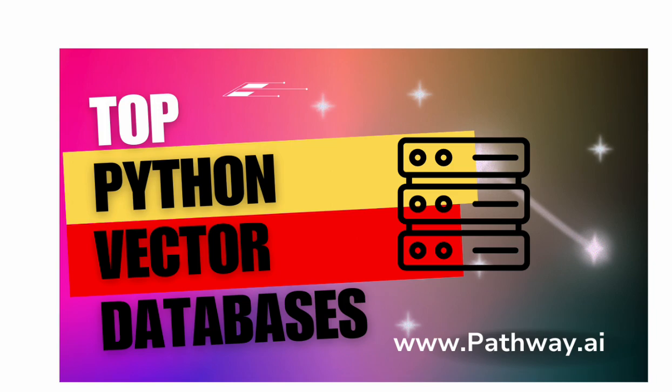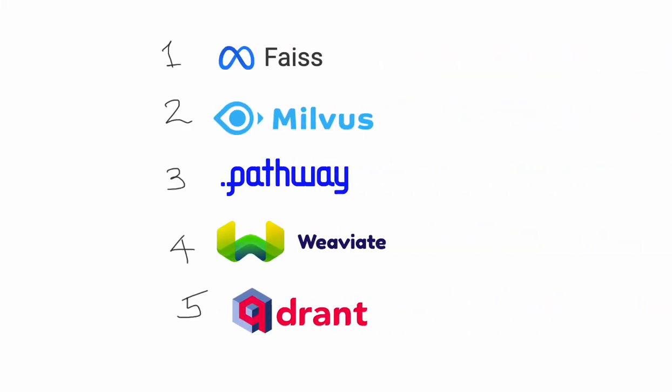There are five of them in my list. Number one is FAISS — a vector database from Facebook, more like a library I should say, not really a full-fledged database, but FAISS is extremely powerful. Then Milvus, Pathway, Weaviate, and Qdrant. Those are the top five Python vector databases because all of them support Python.